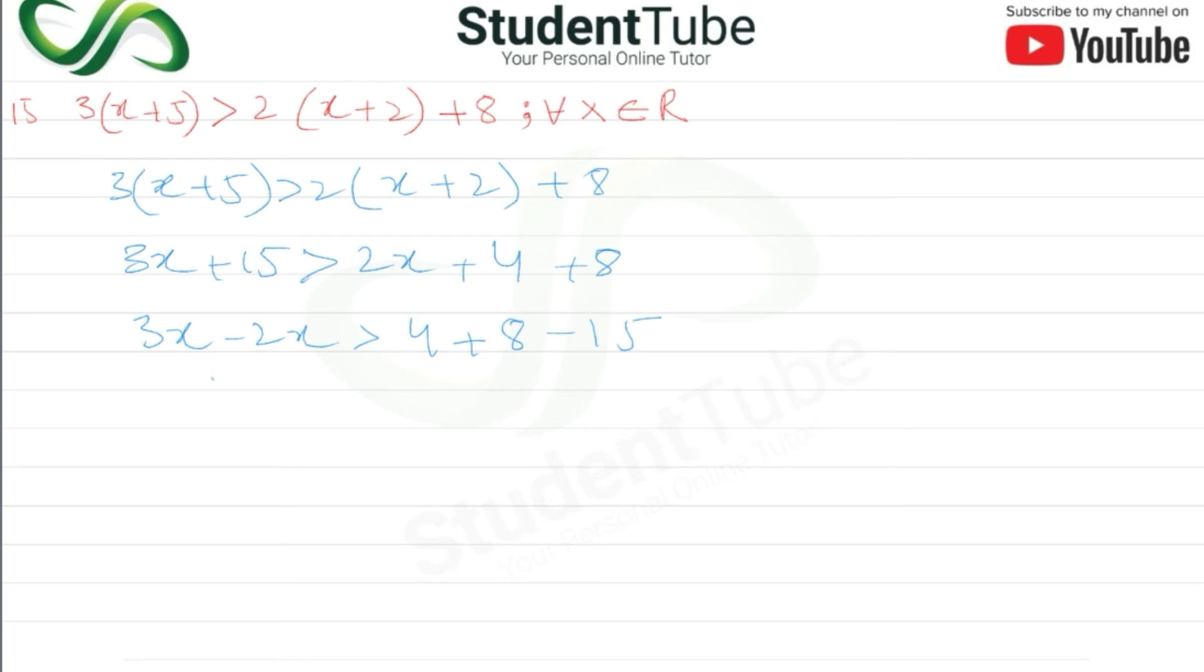So this is just x greater than 4 plus 8, so here is 12, then minus 15. So x > 12 - 15, which is -3.